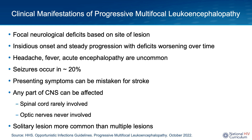Since these demyelinating lesions can involve different brain regions, different patients will have a variety of neurological deficits based on the location of those lesions. Headache, fever, and acute encephalopathy are not commonly seen with PML. Seizures can occur in about 20% of patients, typically due to brain lesions adjacent to the cortex.